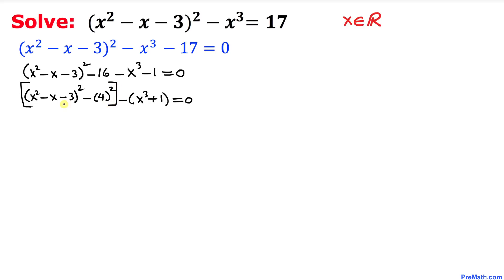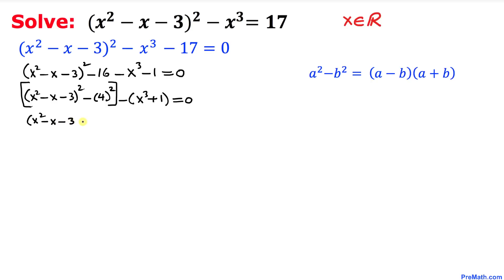Now let's focus on this part inside the bracket — this represents the difference of two squares, so we are going to use the formula: a squared minus b squared equals (a minus b)(a plus b). Therefore we can write this part as (x squared minus x minus 3 minus 4) times (x squared minus x minus 3 plus 4).